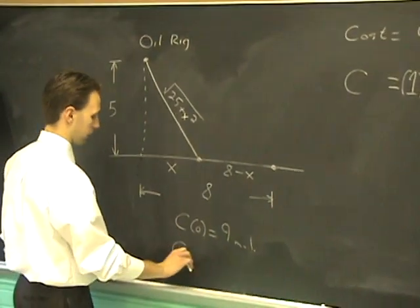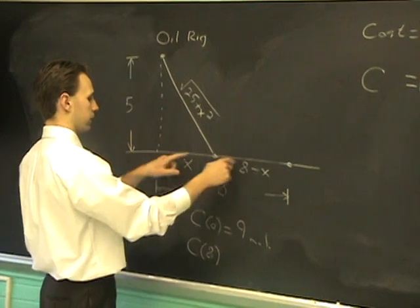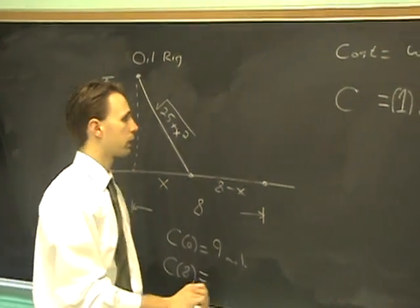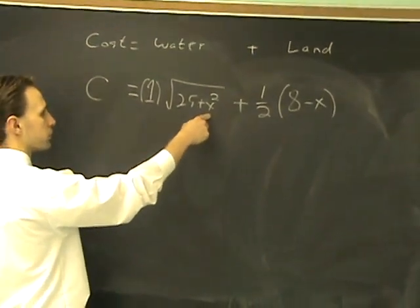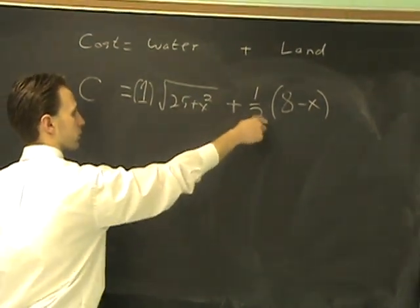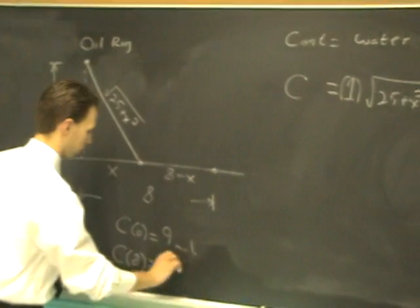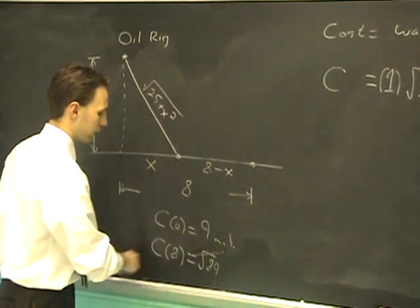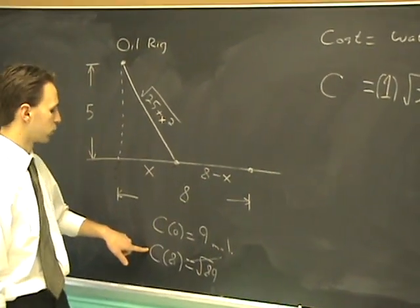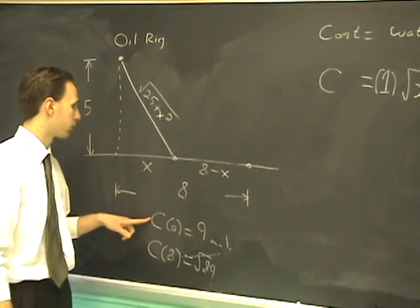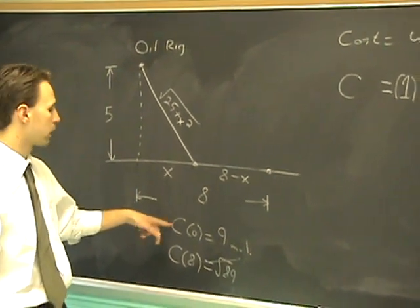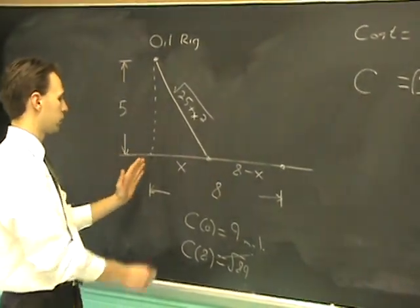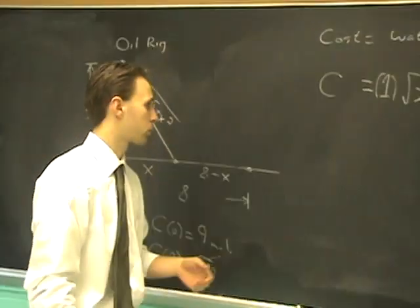The other extreme is C of 8. That means when x is 8, this point is here, and that's all water. If you plug in 8, what you wind up getting is the square root of 25 plus 64, that's 89, plus nothing, so that would be radical 89. Radical 89 is greater than 9 million, so this answer's out. This one is more expensive, so far it's looking like land is the best option. But maybe there's something in between, we've only evaluated the endpoints. For all that we know, it could be an increasing function as x increases.